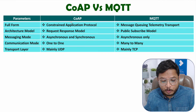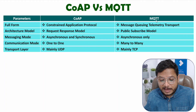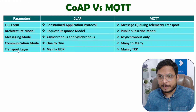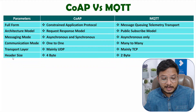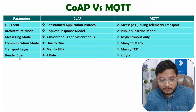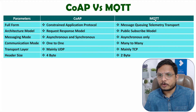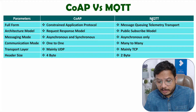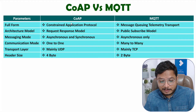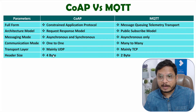The next parameter is Transport Layer. With CoAP Protocol, we have UDP mainly. And with MQTT Protocol, we have TCP at the Transport Layer. Regarding header size of messages, that is 4 bytes with CoAP Protocol and 2 bytes with MQTT Protocol. So the header size with MQTT is 2 bytes and with CoAP it is 4 bytes.